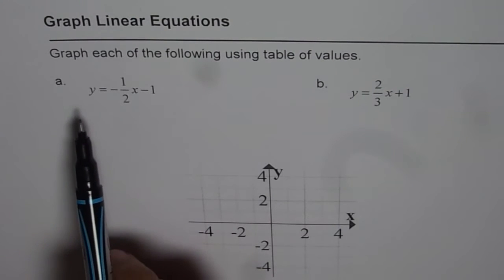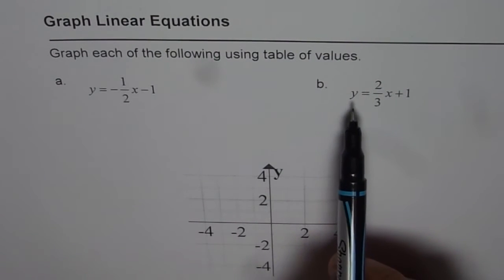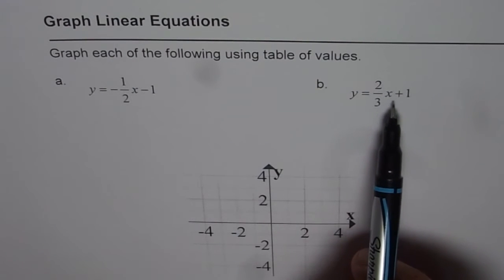Part A is y equals to minus half x minus 1 and B is y equals to 2 over 3x plus 1.